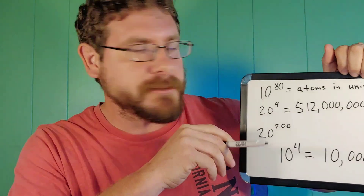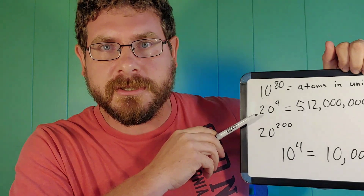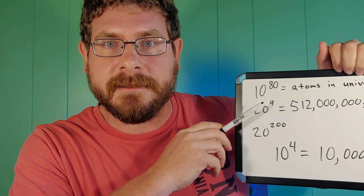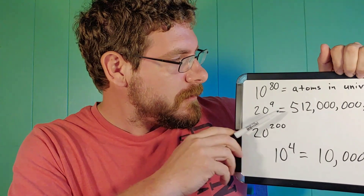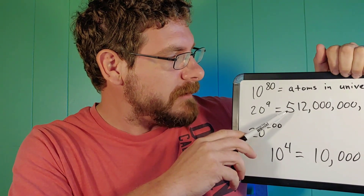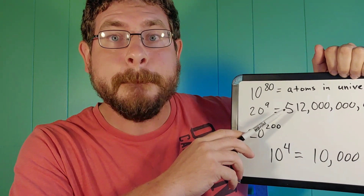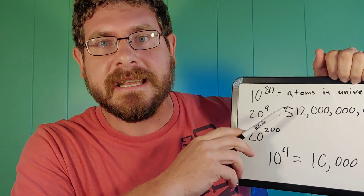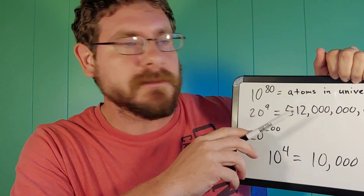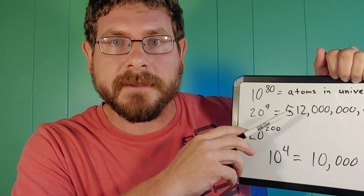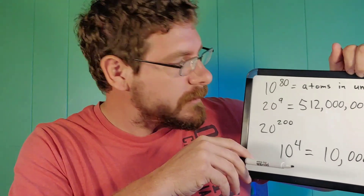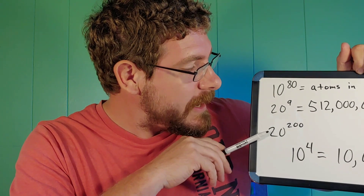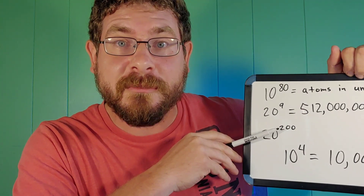So imagine if you had a password where you could use 20 letters of the alphabet and it was nine characters long. That would be 512 billion options. If you did one option every second, that would take you about 16,000 years to figure out what that password is, or to try all the different options. But we're talking about 20 to the 200th power.